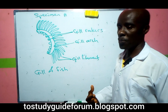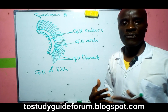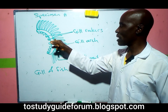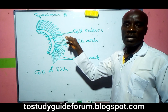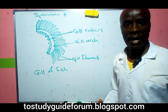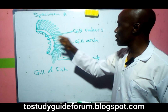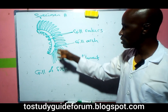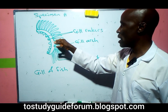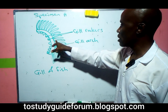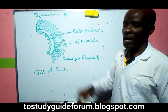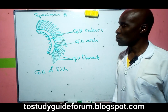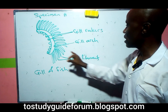The function of the gill rakers is to stop and restrict food from entering or passing through the filaments, thereby damaging them. So the gill rakers help to prevent food particles from entering through the gill chamber, preventing it from being damaged.